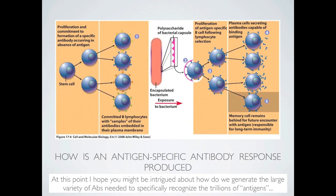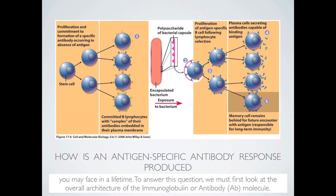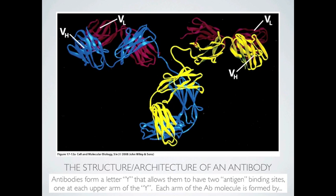At this point, you might be intrigued about how we generate the large variety of antibodies needed to specifically recognize the trillions of antigens we may face in a lifetime. To answer this question, we must first look at the overall architecture of the immunoglobulin, or antibody, molecule. Antibodies form a letter Y that allows them to have two antigen binding sites, one at each upper arm of the Y.